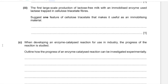Part B(iii): The first large-scale production of lactose-free milk used lactase trapped in cellulose triacetate fibers. Suggest one feature of cellulose triacetate that makes it useful as an immobilizing material. You need a feature that keeps the enzyme fixed and prevents it mixing with the product. This is aided by the fact that the enzyme cannot escape cellulose triacetate because it is not digested by lactose — so cellulose triacetate keeps the enzyme bound.